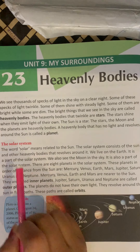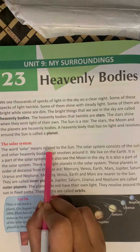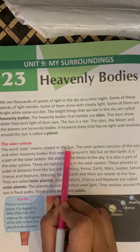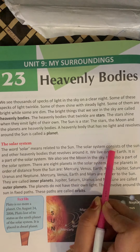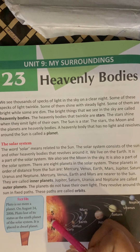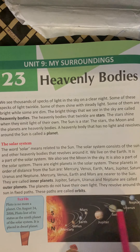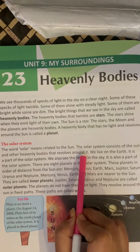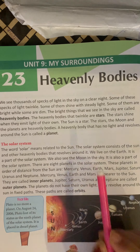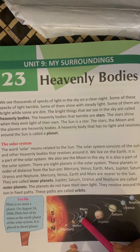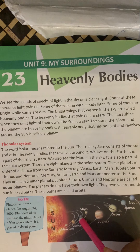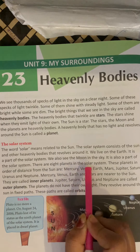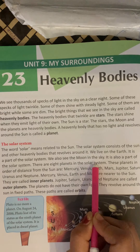The word solar means related to the sun. The solar system consists of the sun and other heavenly bodies that revolve around it. We live on the Earth. Earth is also a part of the solar system. There are eight planets in the solar system.